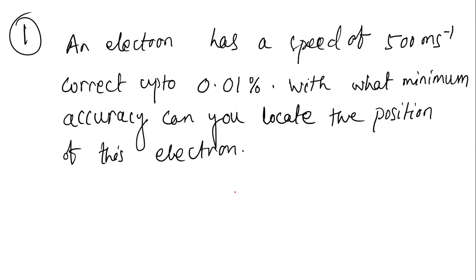In this first question, an electron has a speed of 500 meter per second. The speed is given correct up to 0.01%, meaning the value Δv/v is given as a percentage. We need to find out with what minimum accuracy we can locate the position — essentially, we need to find Δx.